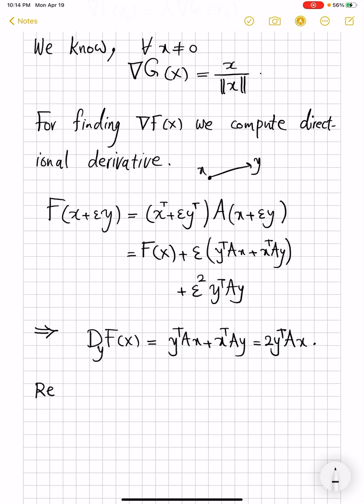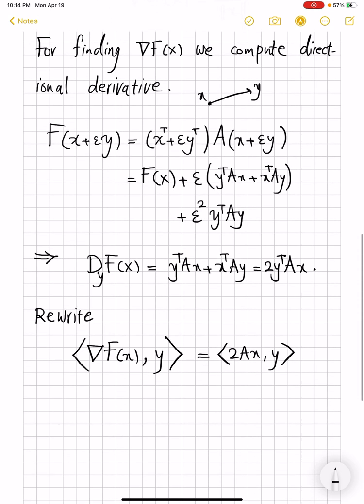And if we rewrite, so nothing computational down here, I'm just rewriting. We know the directional derivative also agrees with multiplying the gradient into that direction, or simply taking their dot product. And this quantity on the right-hand side is multiplying 2Ax by y. So because now this is true for every y, we conclude that gradient of F at x is twice Ax. And that's really important.